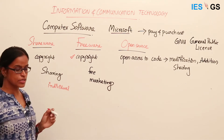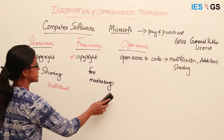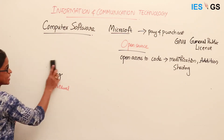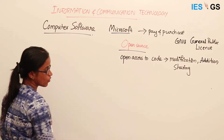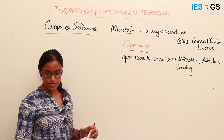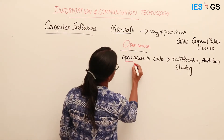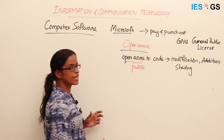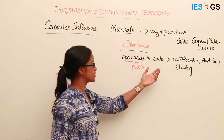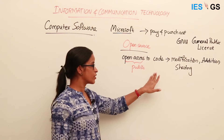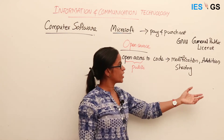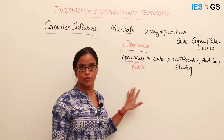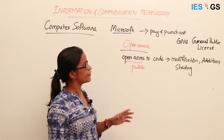Open source is different from all these types of software. Open source means the public has access to the code itself — the code is not hidden, it is published. The code can be modified, features can be added, and it can be shared by anyone. So it is completely free to use.